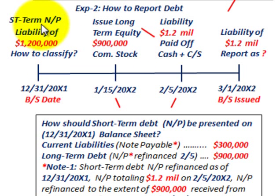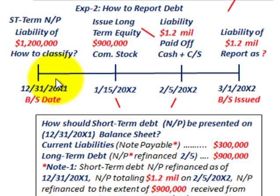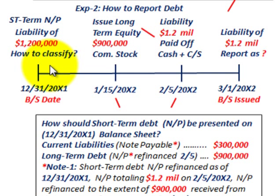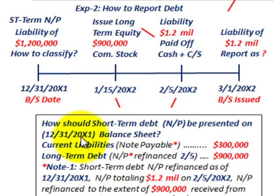To summarize: we had to determine how this short-term notes payable would be reported on the 12-31-20X1 balance sheet, even though the debt was paid off after the balance sheet date on 2-5-20X2. We issued long-term equity of $900,000 on 1-15-20X2 to cover that portion of the payment. So $900,000 was replaced with long-term debt and reported as such, while the remaining $300,000 remains as current debt — and that's how it's reported on the 12-31-20X1 balance sheet.